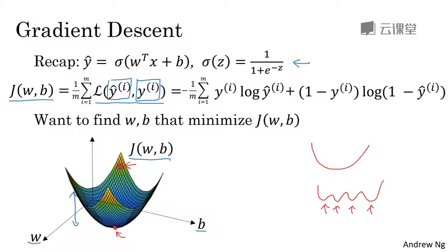So after one step of gradient descent, you might end up there, because it's trying to take a step downhill in the direction of steepest descent or as quickly downhill as possible. So that's one iteration of gradient descent. And after two iterations of gradient descent, you might step there, three iterations and so on. I guess this is now hidden by the back of the plot until eventually, hopefully you converge to this global optimum or get to something close to the global optimum. So this picture illustrates the gradient descent algorithm.